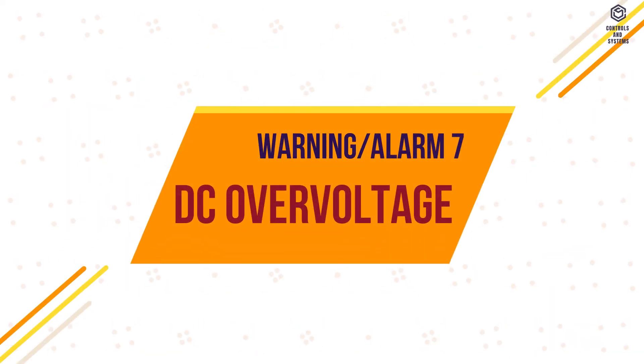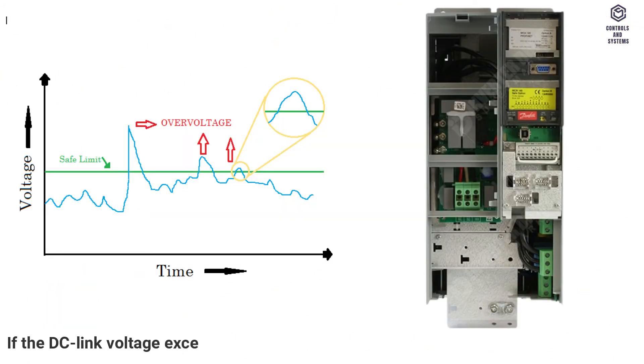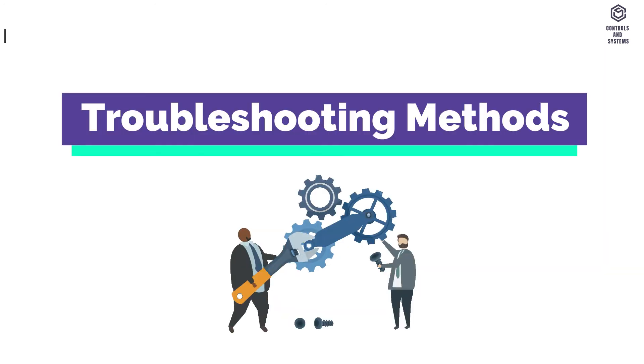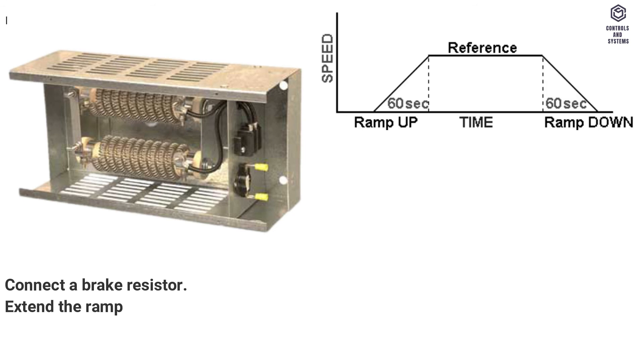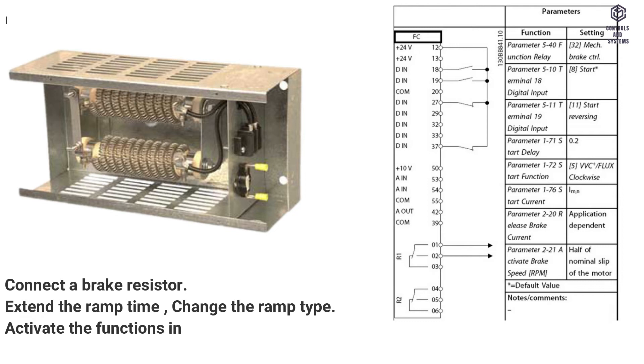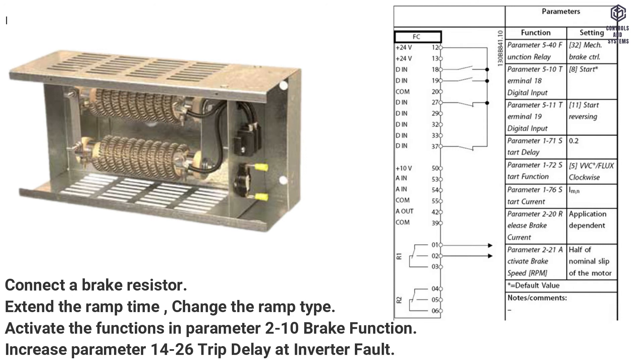Warning, Alarm 7, DC Over Voltage. If the DC link voltage exceeds the limit, the frequency converter trips after some time. Troubleshooting methods: Connect a brake resistor. Extend the ramp time. Change the ramp type. Activate the functions in parameter 210 brake function. Increase parameter 1426 trip delay at inverter fault.